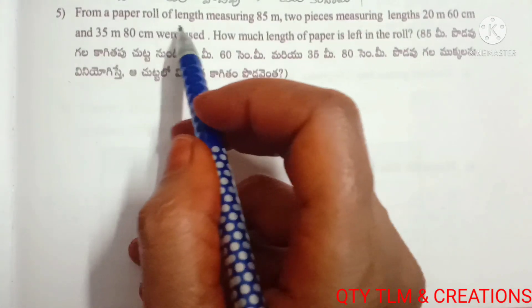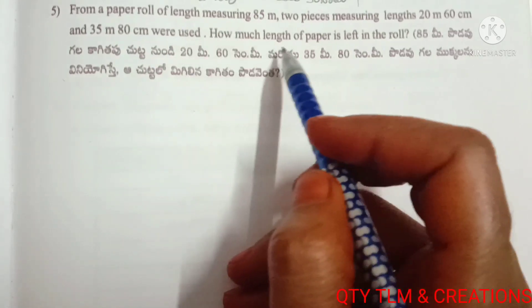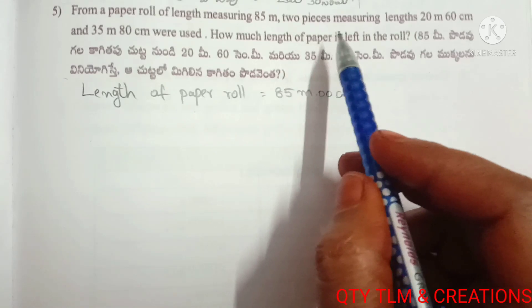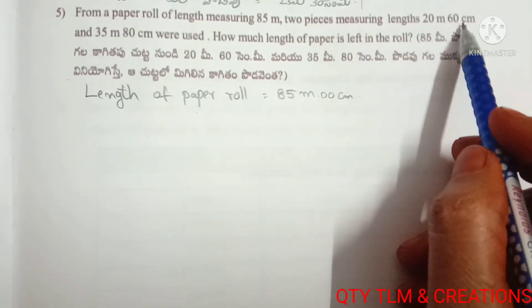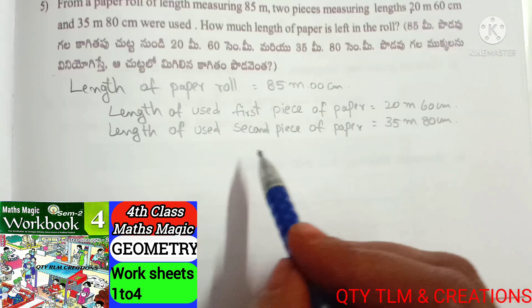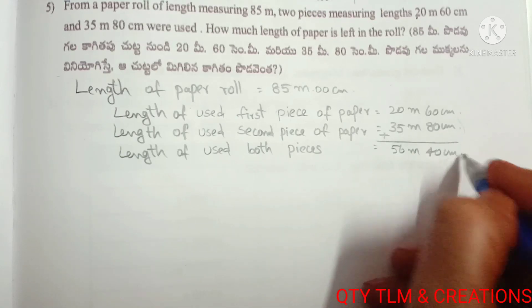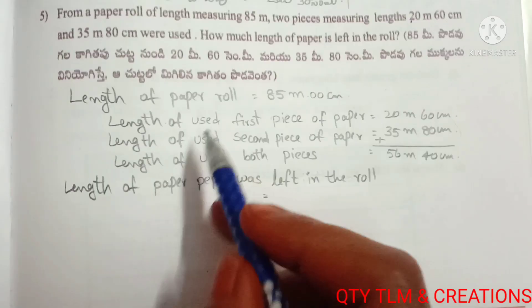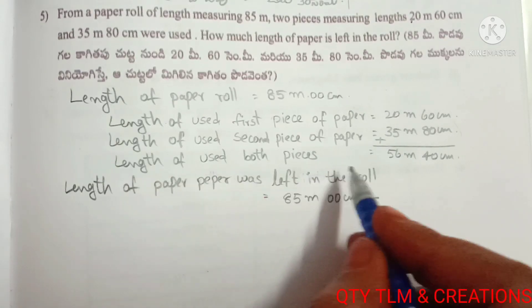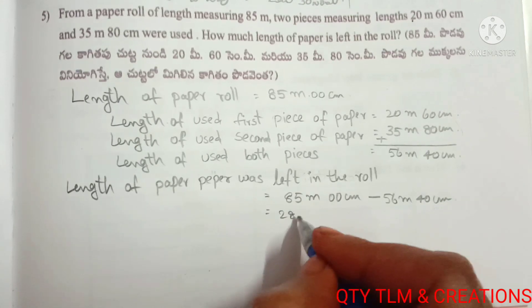Next question: From a paper roll of length 85 meters, two pieces measuring 20 meters 60 centimeters and 35 meters 80 centimeters were used. How much length of paper is left in the roll? Length of used first piece equals 20 meters 60 centimeters, and length of used second piece equals 35 meters 80 centimeters. Length of both pieces used equals 56 meters 40 centimeters. Length of paper left equals 28 meters 60 centimeters.